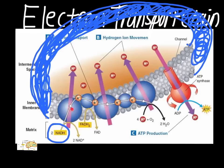At the very first part of the electron transport chain, it's going to use some energy from that electron to bring a hydrogen into the inner membrane. The electron then keeps moving through ETC, brings in another hydrogen at the third step, then another hydrogen yet again — so three total.